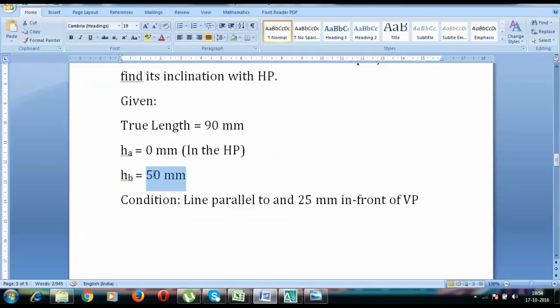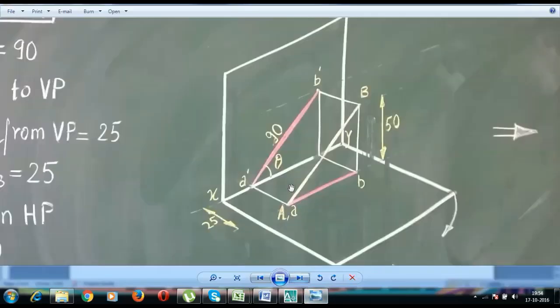One more thing that we need to do is this end point B lies at a height of 50mm from the reference line or from the horizontal plane. Now this 50mm height can only be seen from the front.